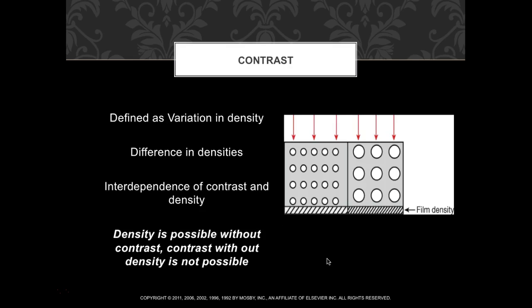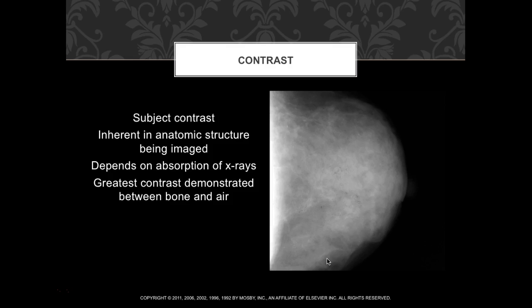Contrast is defined as variations in density — the difference in densities between adjacent structures. Seeing the outline of a kidney versus the fat around it is contrast. Density is possible without contrast, but contrast is not possible without density. If there's no exposure on your image receptor, there's no density, and therefore no contrast. You must have density in order to have contrast.